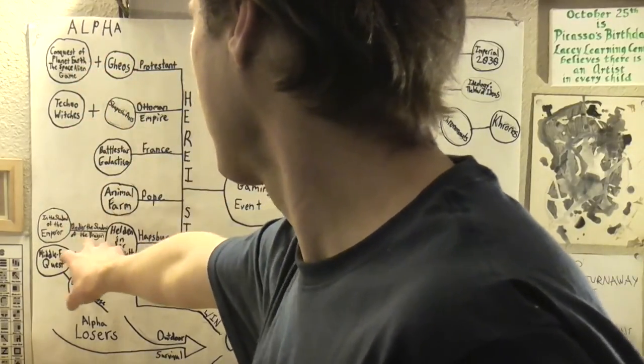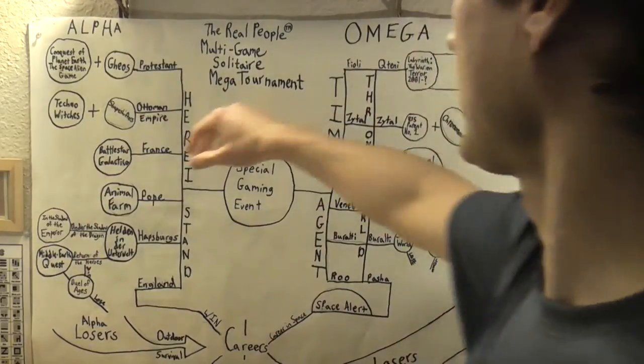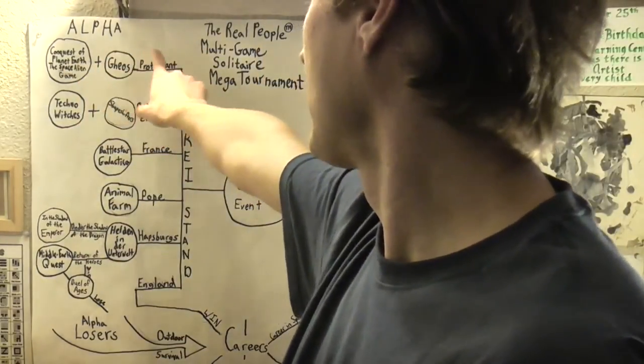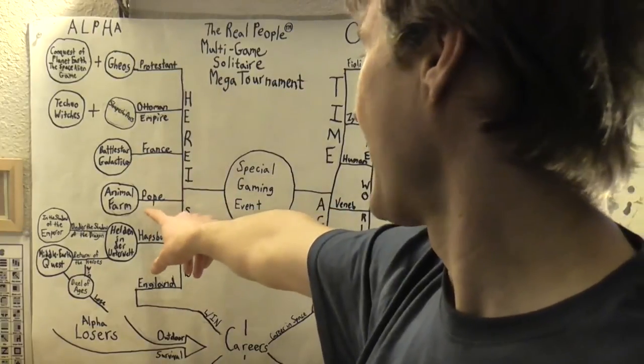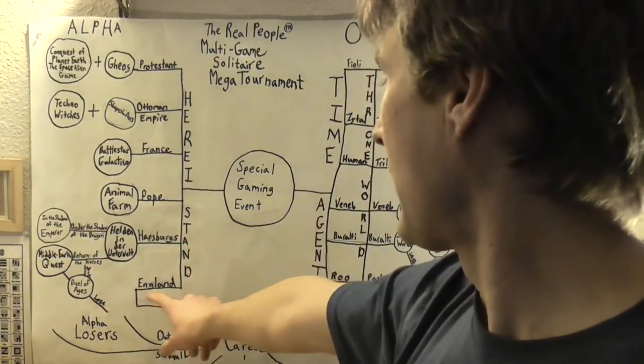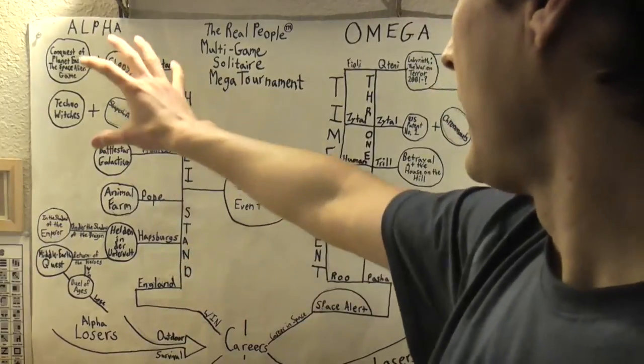So the first leg here would be the Protestant leg, the Ottoman Empire leg, the France leg, the Pope leg, the Habsburg leg, and the England leg of the Alpha bracket.